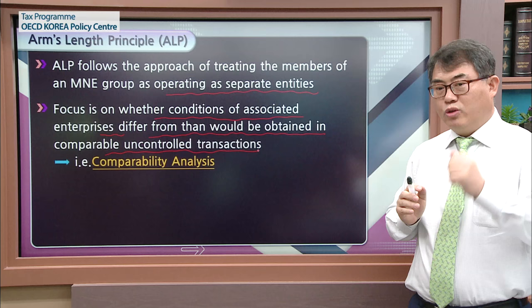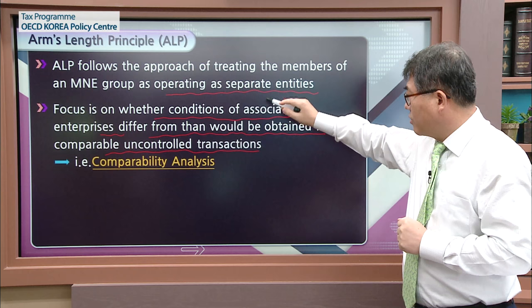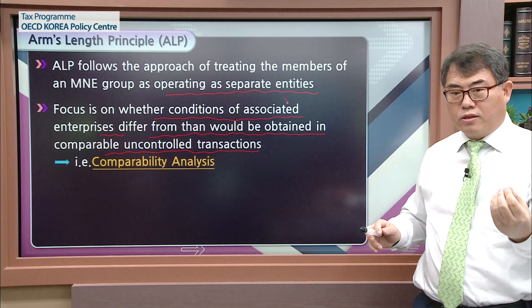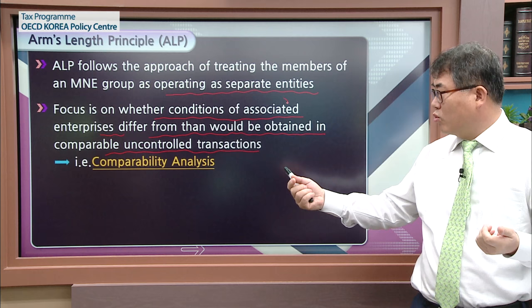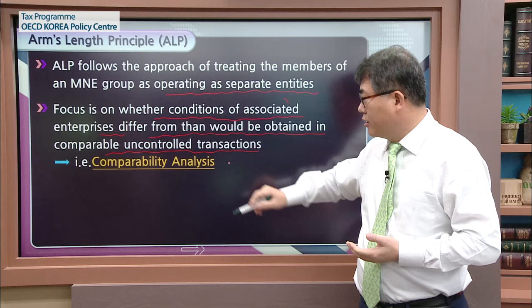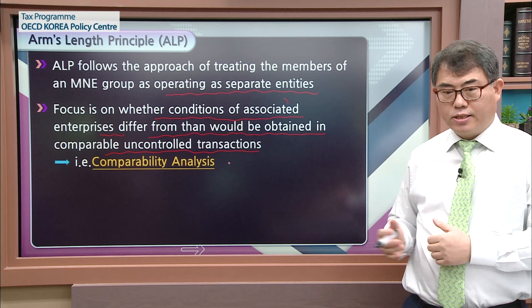The arm's length principle follows the approach of treating the members of the MNE group as operating as separate entities. This separate entity approach treats the associated enterprises as if they were independent entities. The focus is placed on whether conditions of associated enterprises differ from those that would be obtained in comparable uncontrolled transactions. You need to compare the conditions of the associated enterprises with the conditions of the uncontrolled transactions — that is the basic concept of comparability analysis, which will be dealt with in depth in a later lecture.